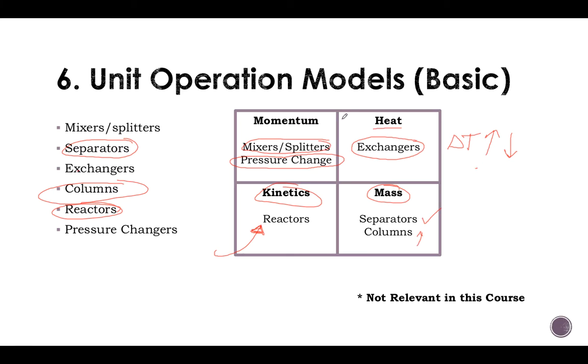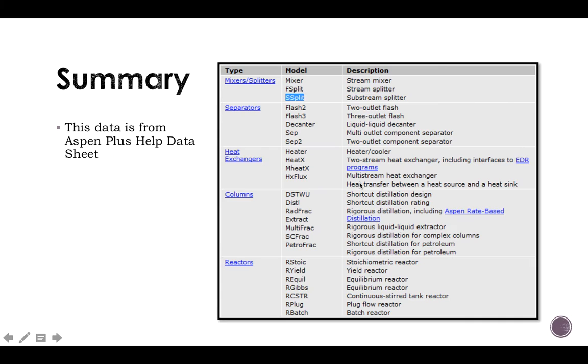Instead of showing you, I'd rather add the help button—Help Data Sheet. It's right here. Mixer, this is the type I was talking to you about. One thing is the type, but the model is what is important. Stream splitter, stream mixer, substream splitter. You can keep reading. Separators: there are two flashes, three flashes, which mean two outlets, three outlets.